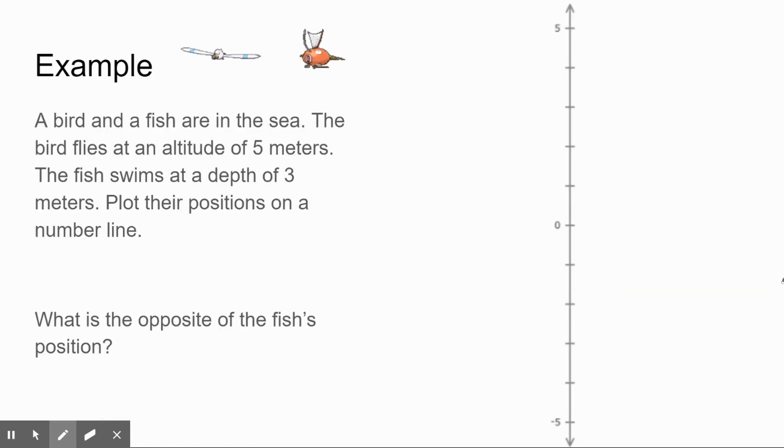Now let's look at an example. Let's say we have a bird and a fish in the sea. The bird flies at an altitude of five meters while the fish swims at a depth of three meters. First, we're going to plot both of their positions on a number line. You'll see here we have a vertical number line. That's okay. Number lines can be any direction you want.